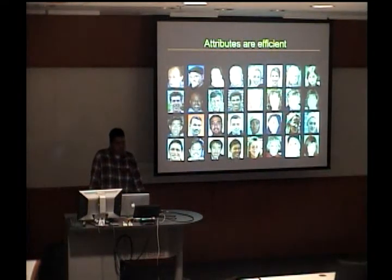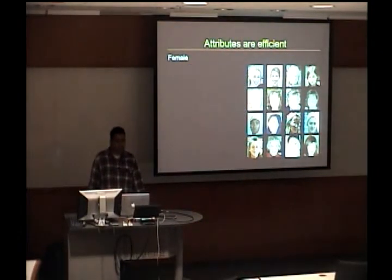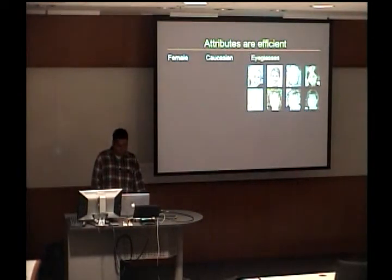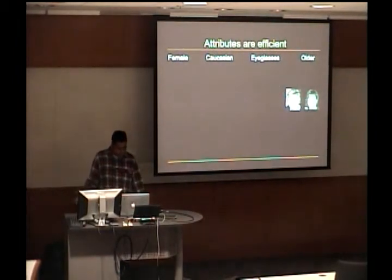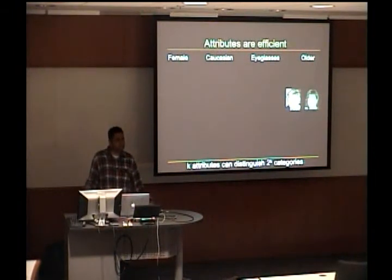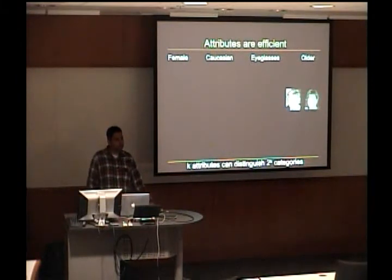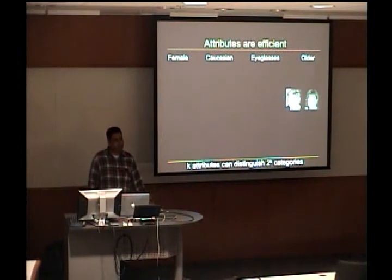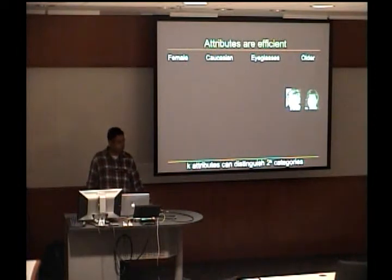Finally, a third key benefit of attributes is that they're quite efficient. Using one attribute, we can filter a list by a factor of two, by another factor of two, and so on. In theory, k attributes can distinguish 2^k different categories. In practice, this isn't really true because not all attributes are going to be equally discriminative or used accurately all the time. But if you imagine having continuous-valued or multi-valued attributes, then the base on this exponent could be much higher, so it's not clear that 2^k is really an upper bound.